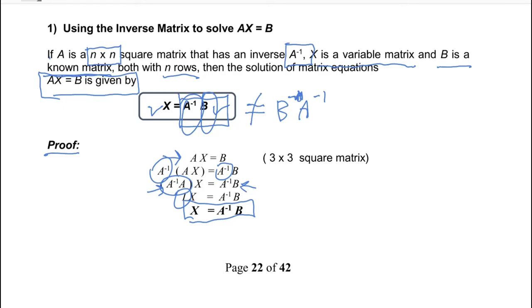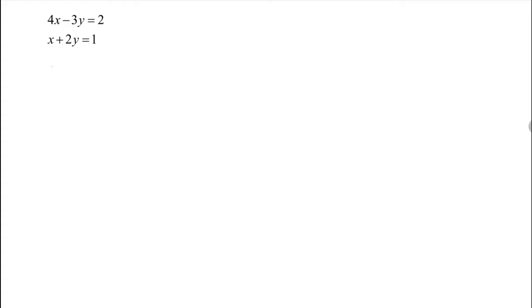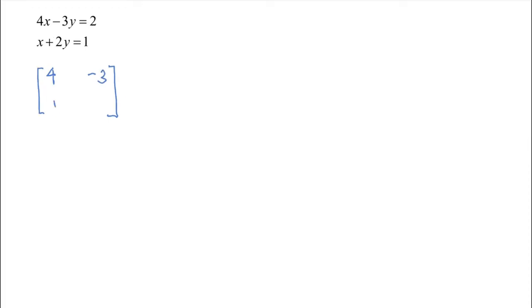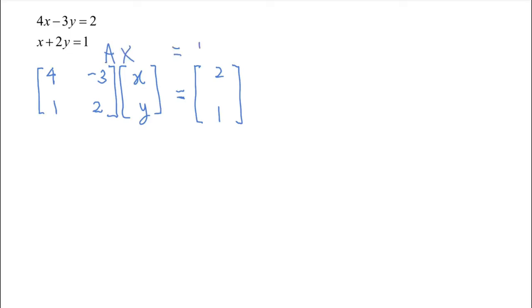That is the first step. The second step is to find A inverse using the adjoint method. The equations given are 4x minus 3y equals 2 and x plus 2y equals 1. The first step is to write the equations in single matrix form: the matrix A is [4, -3; 1, 2], matrix X is [x; y], and matrix B is [2; 1] — this is the matrix form AX equals B.